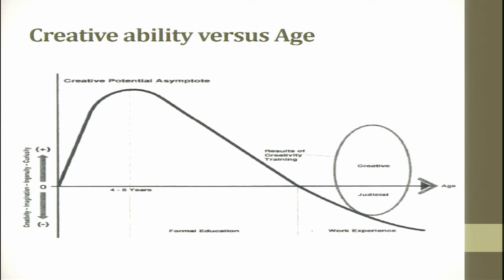Moving further — this is about creativity ability versus age. When you are in the age of 0 to 5, you have maximum creativity. After that the curve starts dropping — possibly because you start studying in a structured way, so all your creativity goes down drastically. After maybe age 40, 50, or 60, creativity goes into the negative side. When creativity goes negative, you become judgmental — your imagination is stopped, you start critically looking and commenting rather than imagining.